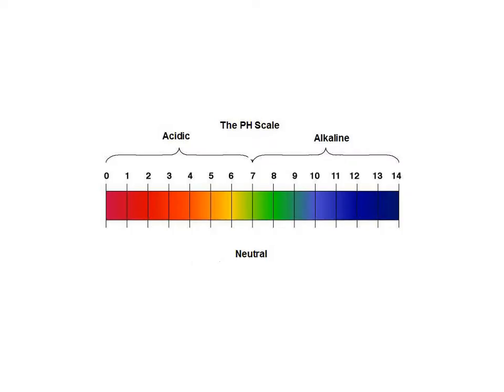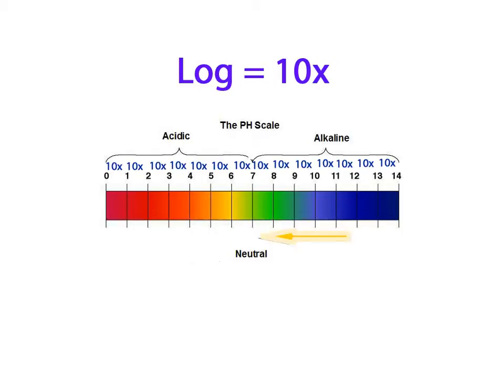The pH scale is based on a logarithmic scale that ranges from 1 to 14. A logarithmic scale is a scale based on multiples of 10. So each number on the pH scale represents 10 times more hydrogen ions as we move from the right to the left on the pH scale.